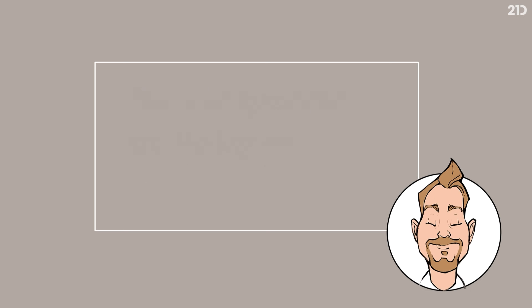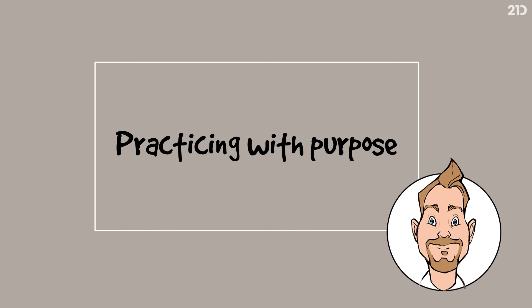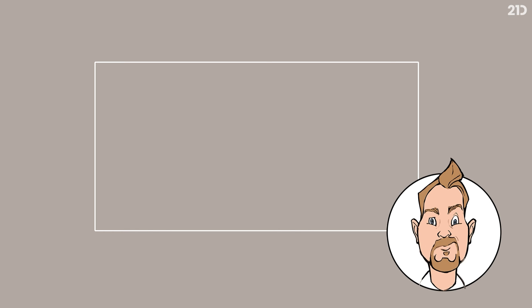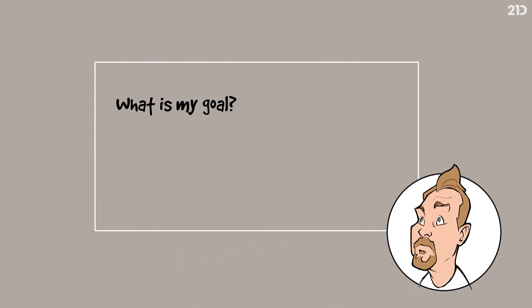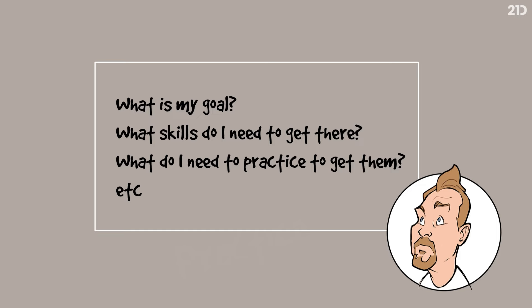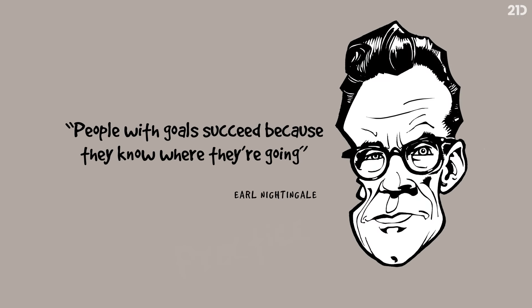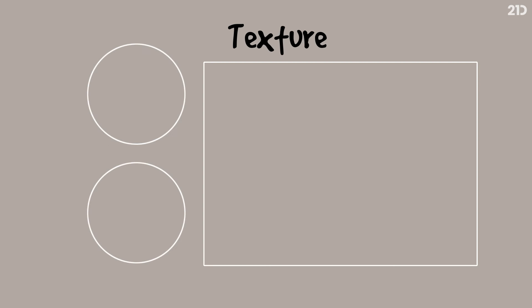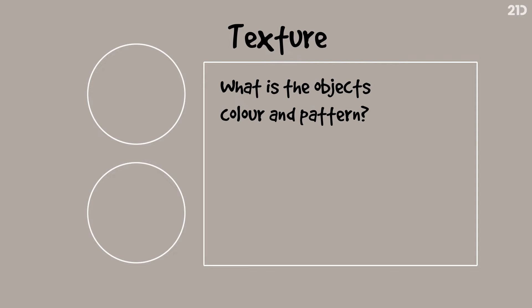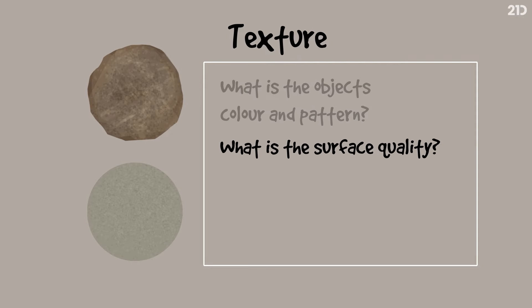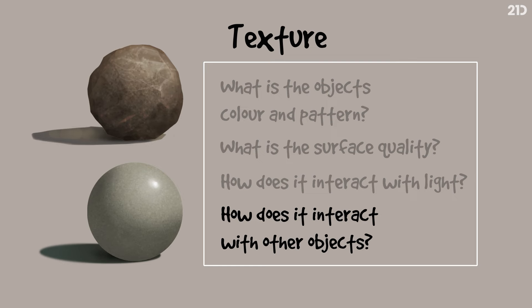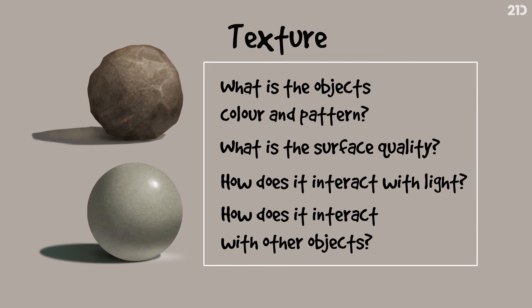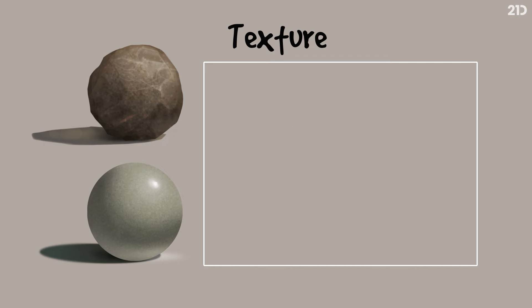It's the principle behind practicing with purpose. The advice you're often given when you ask what do I do to improve my art is to practice, practice, practice. But someone who asks what and how they should be practicing will get much further faster than someone who just practices without a plan. A more specific example is when I'm painting textures. The questions I ask myself are: what is the object's colour and pattern? What is the surface quality? How does it interact with light? And how does it interact with other objects? When I answer these, I understand the texture I'm looking at better and can get the results I want.